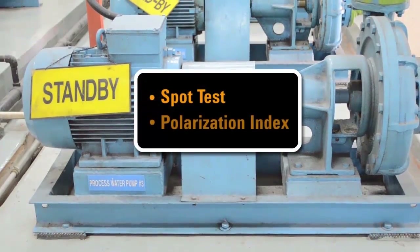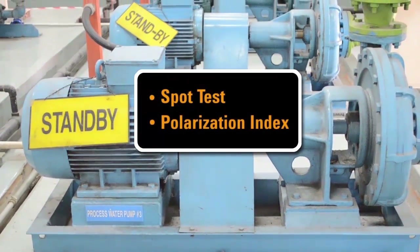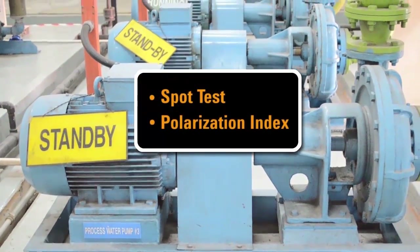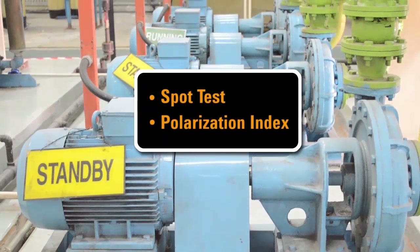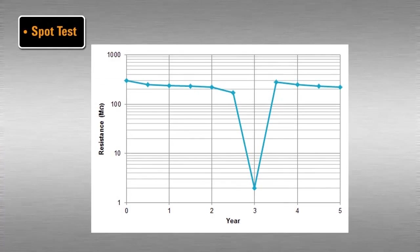Spot test and polarization index test are the two most common tests for electric motors. Spot test is used to monitor motor insulation resistance throughout its lifetime. In this test, a test voltage is applied for a fixed period, normally 60 seconds or less. The resistance value is recorded at the end of the test period.